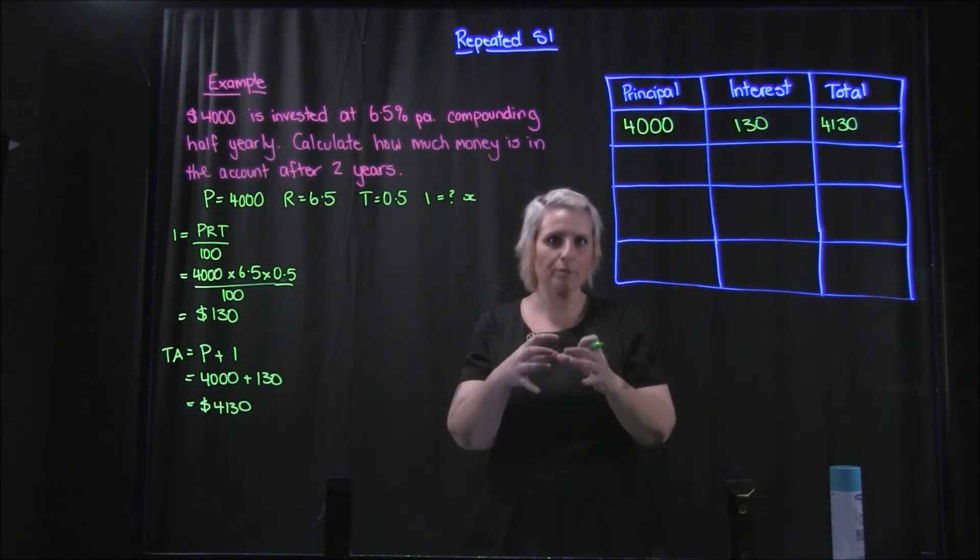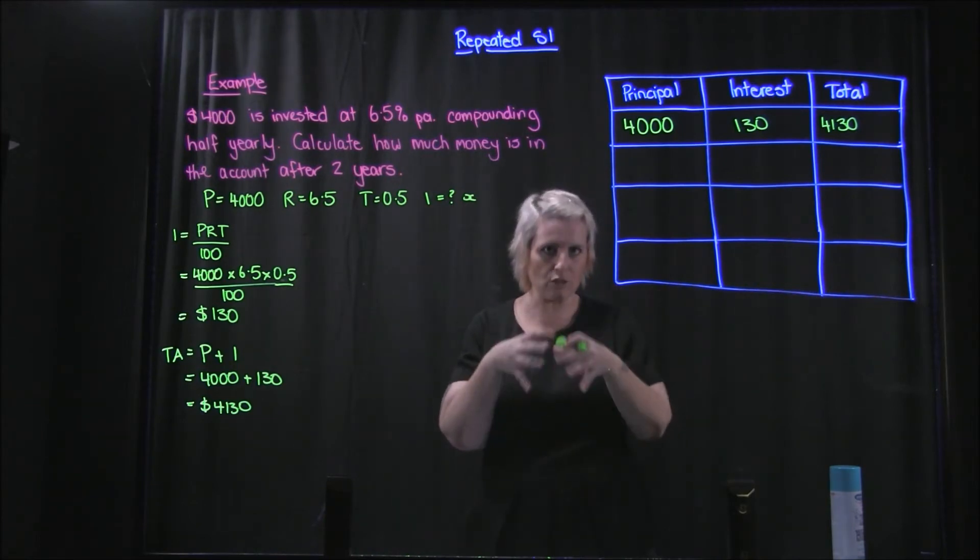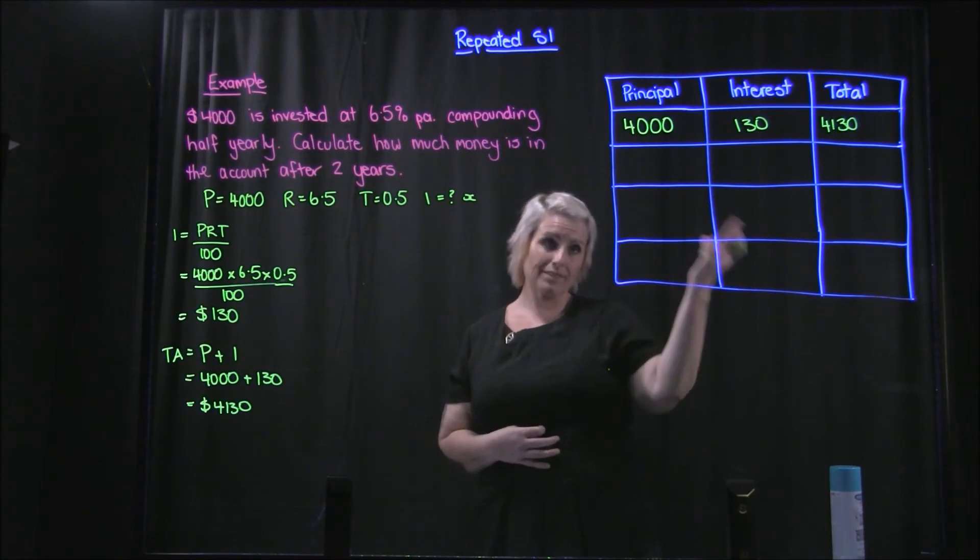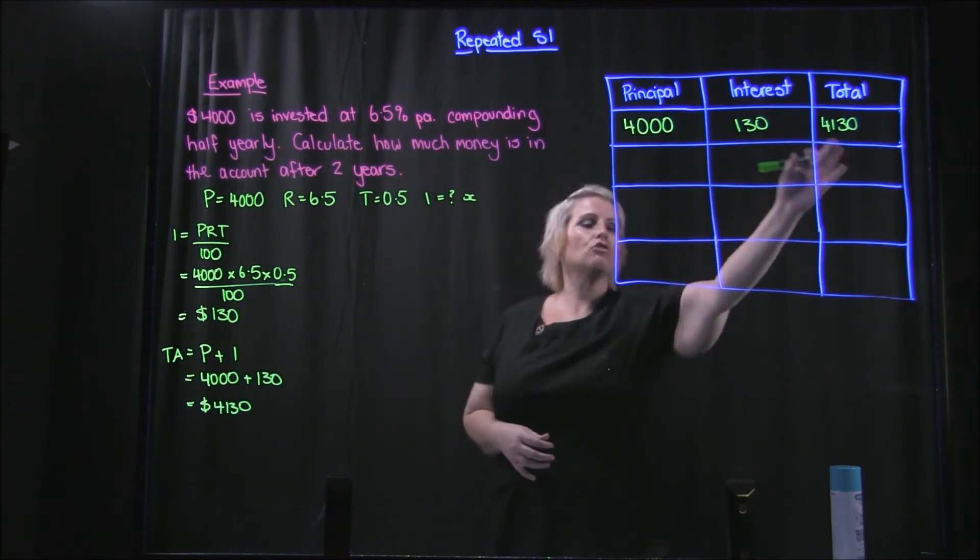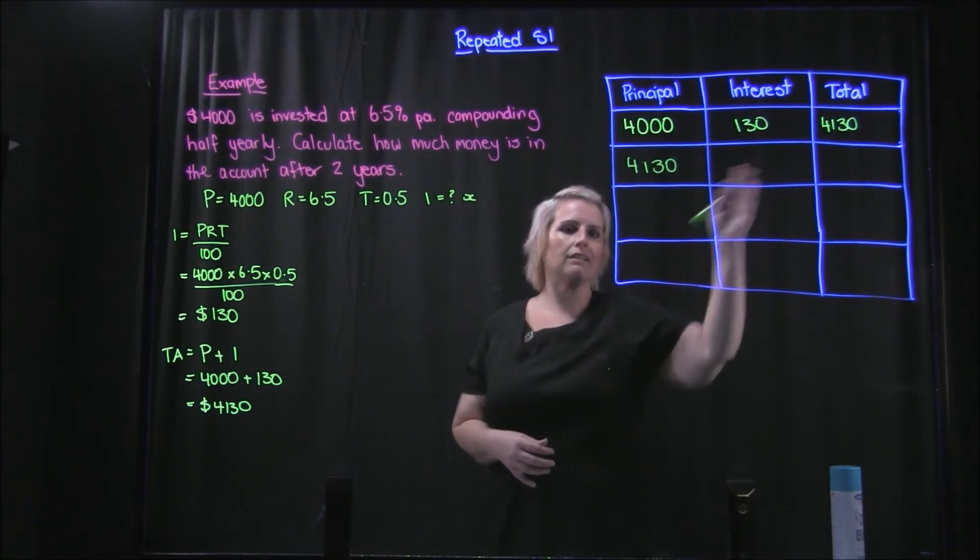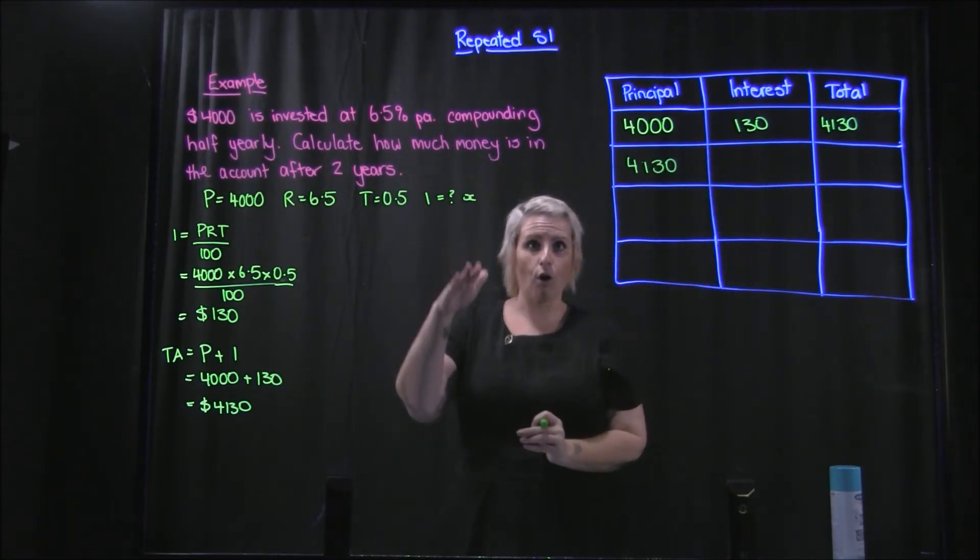Then the next six months is worked on not just your original principal like simple interest. So simple interest is normally just that principal amount, no matter how long, the interest is worked just on that amount. Compound interest works like this where the interest is then paid so your new principal includes the interest you were paid at the six month mark when it compounded.